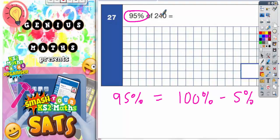100% is your original value, so 240 is our 100% value. If we can find out 5% of 240 and take it off, we'll get our answer. It is not the same as just taking off 5 from 240; we need to work out 5% of 240.